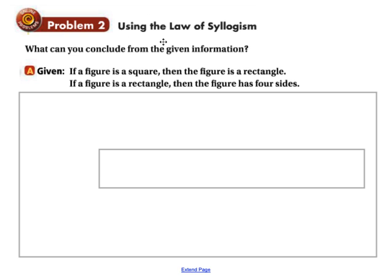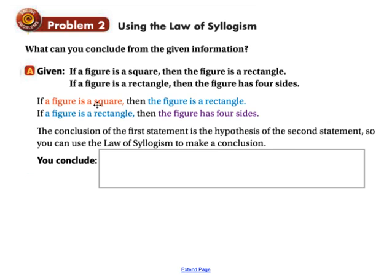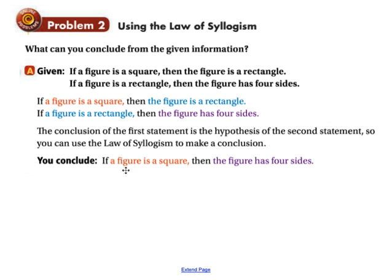Let's look at examples using the law of syllogism. Given: if a figure is a square, then the figure is a rectangle. If a figure is a rectangle, then the figure has four sides. The figure is a square is the first hypothesis; the figure is a rectangle is the conclusion, which becomes the next hypothesis; the figure has four sides is the last conclusion. So we can say: if the figure is a square, then the figure has four sides.